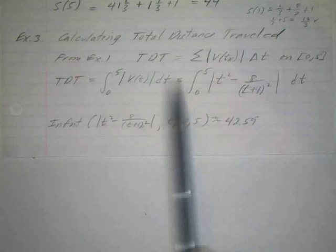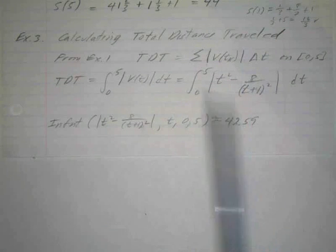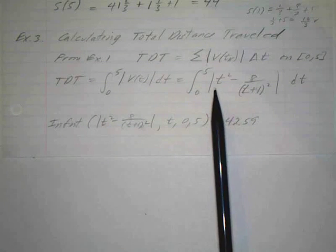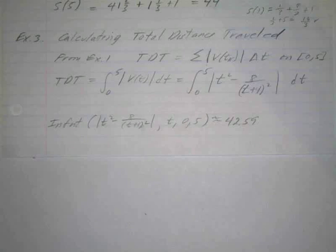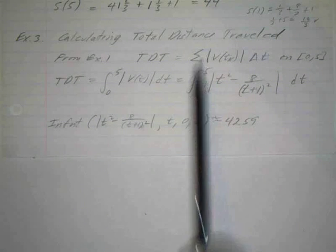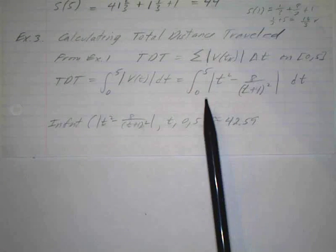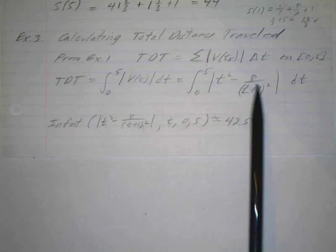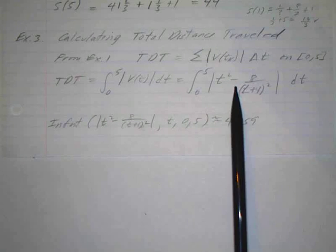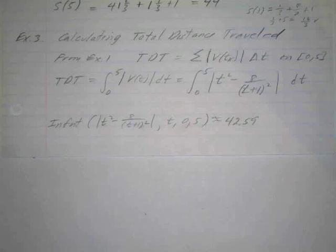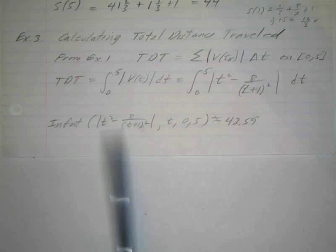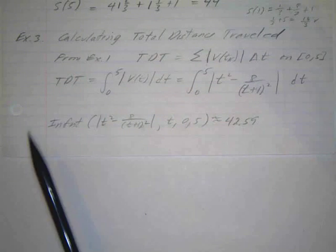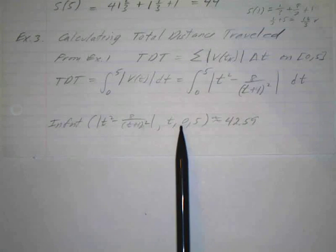So again, the total distance traveled is just that integral. The function was T squared minus eight over T plus one squared, and we're taking the absolute value of that. These are kind of tricky to do analytically without a calculator because you don't know where it's above the graph and where it's below the x-axis. You would actually have to graph it, break the interval into portions, and negate the parts that are negative. So it's a lot easier to use the calculator — that's basically what they did in example three on page 381, using the numerical integral of the absolute value with respect to T from zero to five.